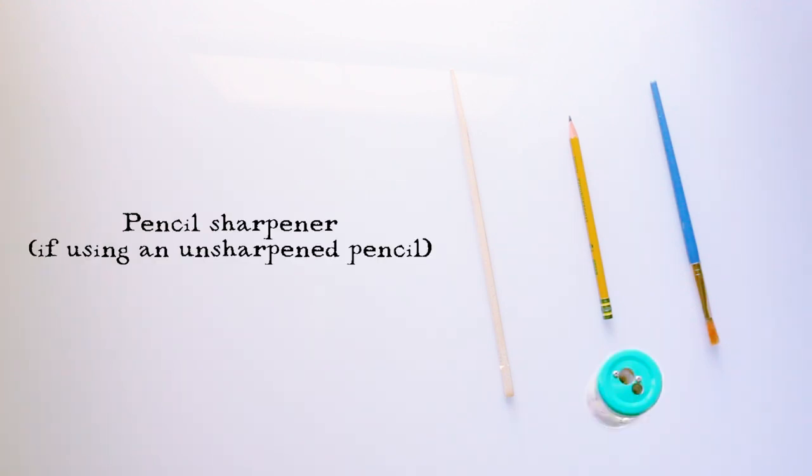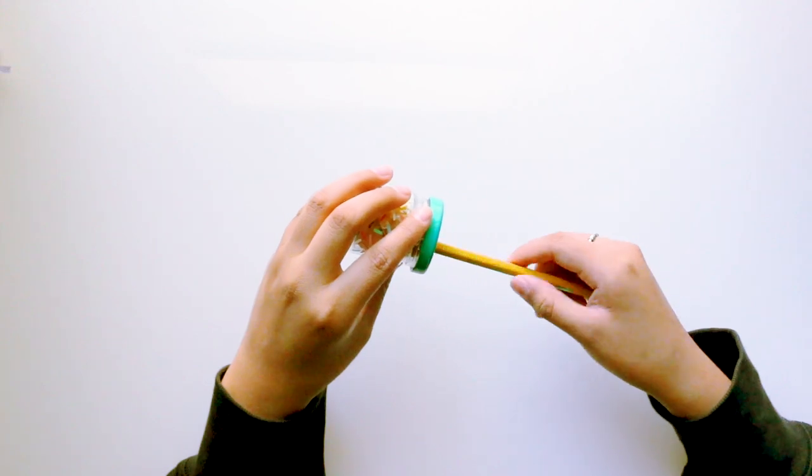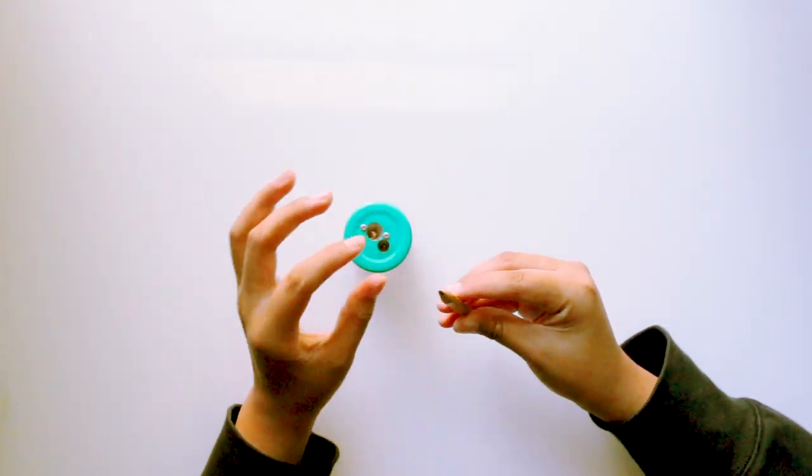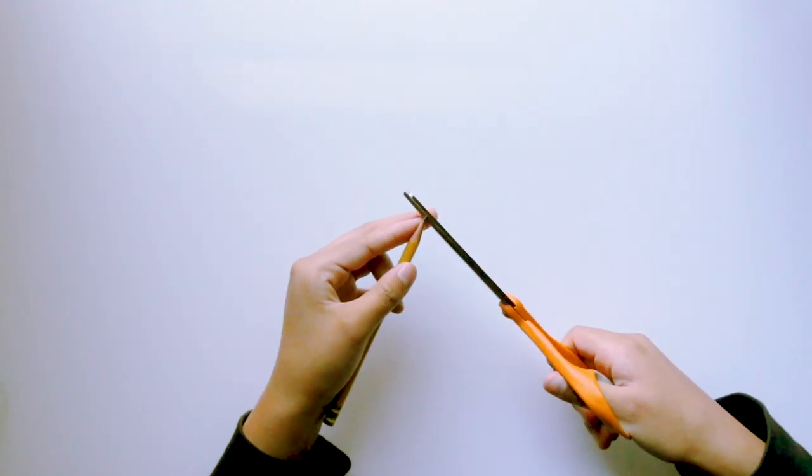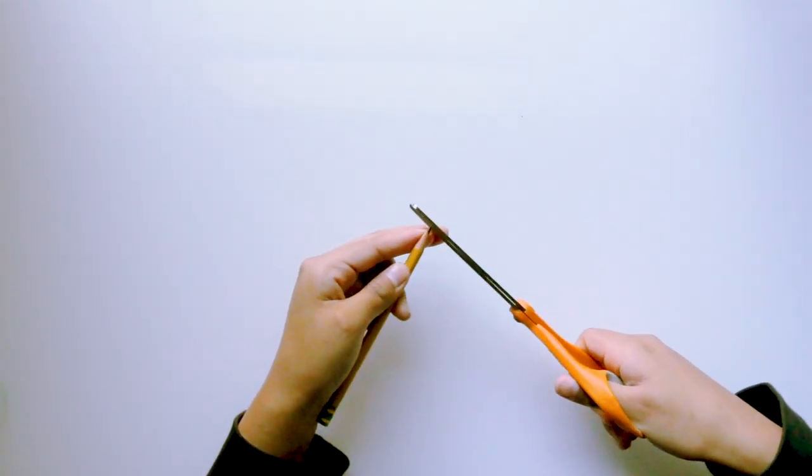If you're using an unsharpened pencil, then you'll also need a pencil sharpener. Starting off with the pencil version, if you're using an unsharpened pencil, go ahead and sharpen it just until the graphite starts to appear. Then using the scissors, cut off the tip of the pencil to make it flat. I sharpened mine a bit too much but I'll fix that later.